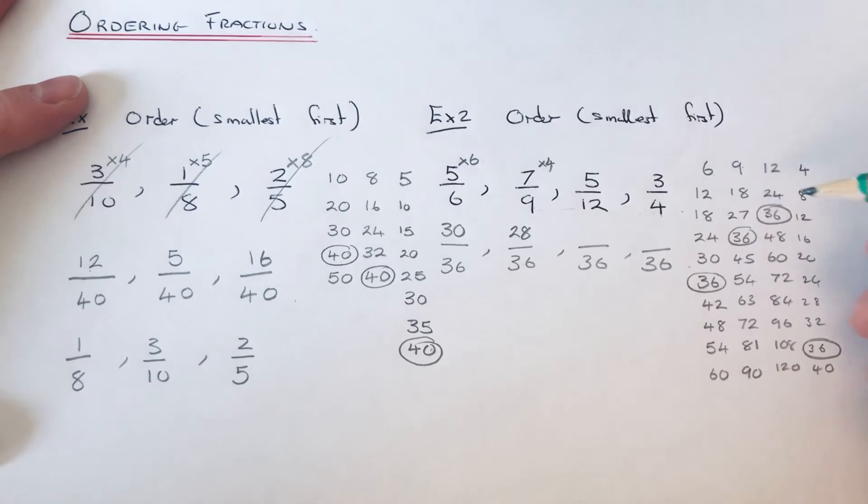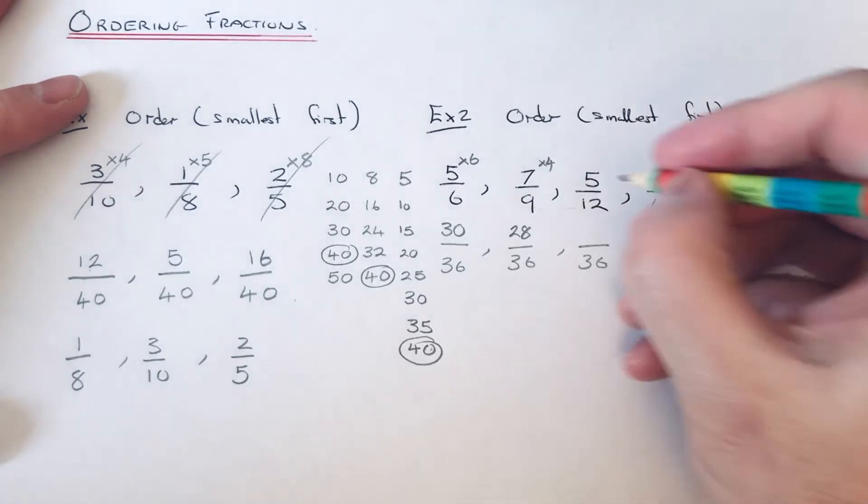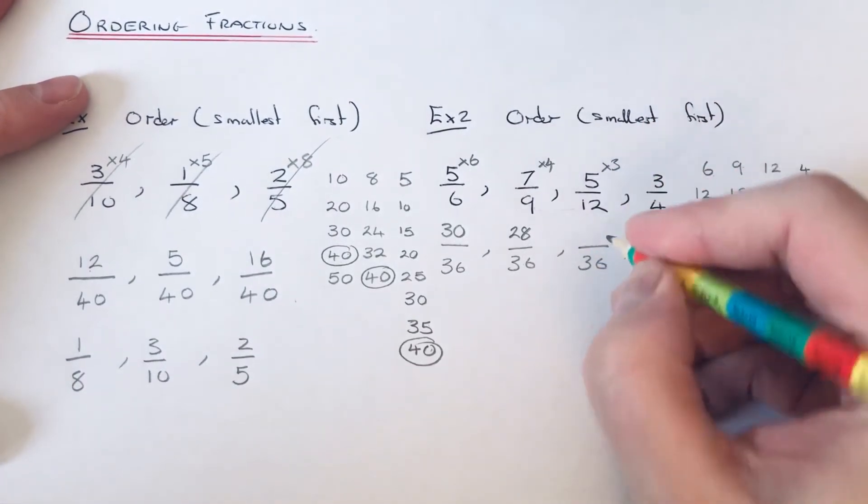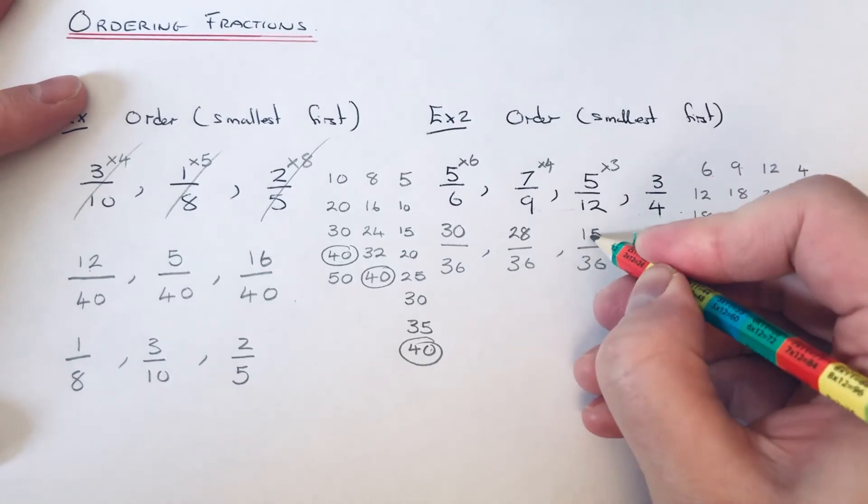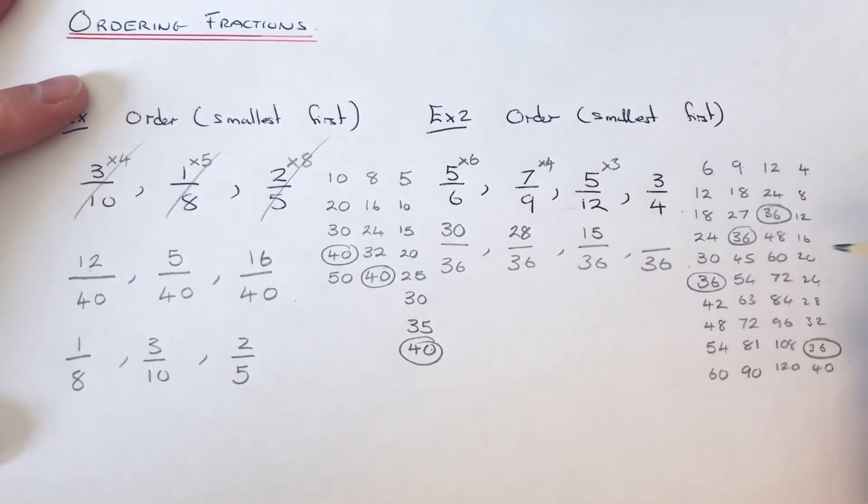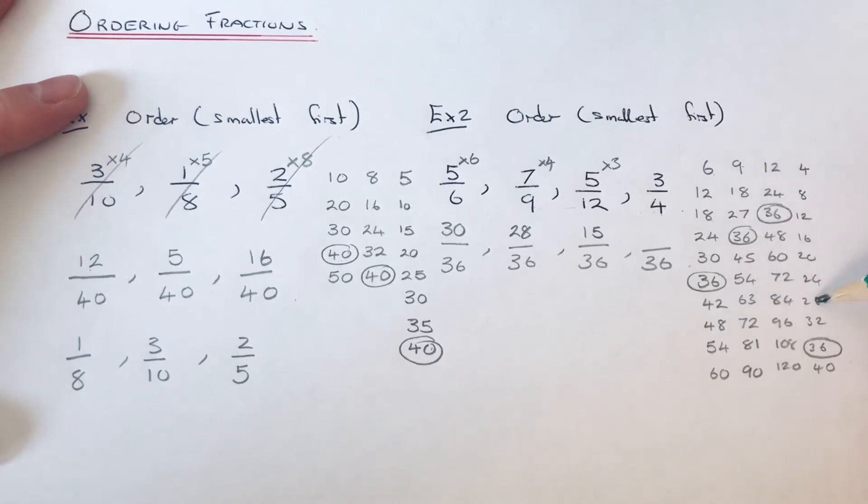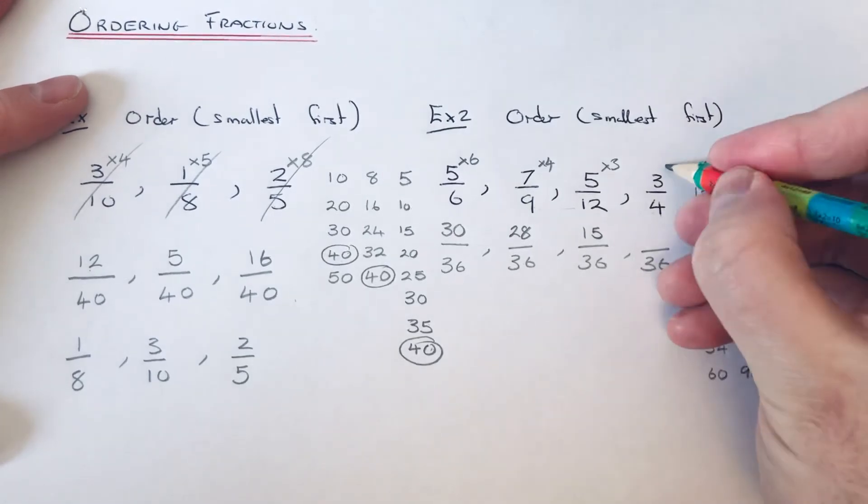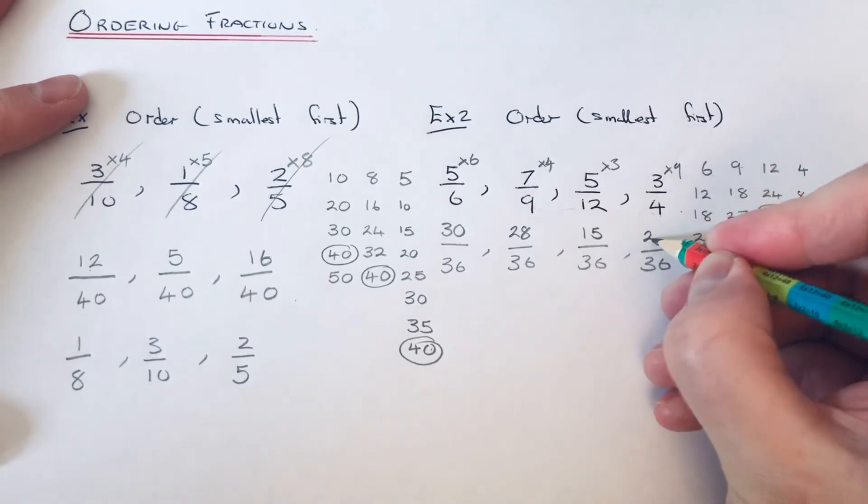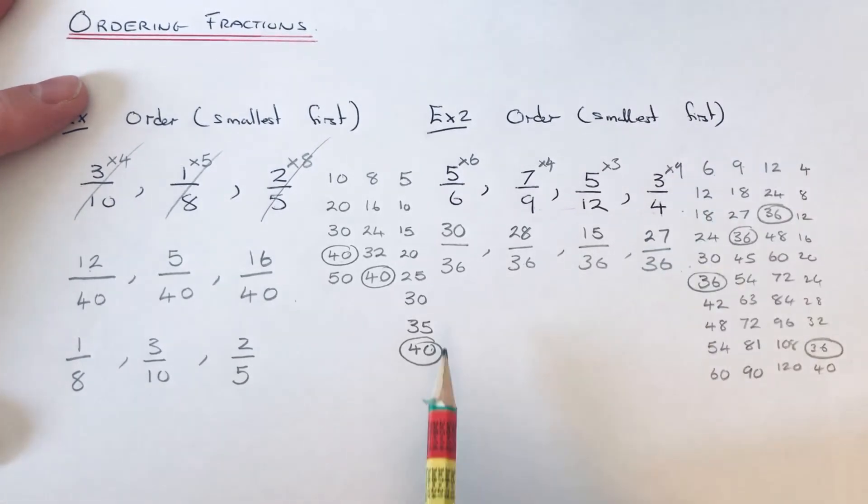How many times did 12 go into 36? 1, 2, 3. So we need to multiply this one by 3. 5 times 3 is 15. How many times did 4 go into 36? 1, 2, 3, 4, 5, 6, 7, 8, 9. This one times 9. 3 nines are 27.